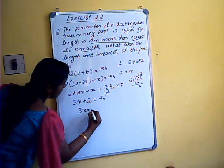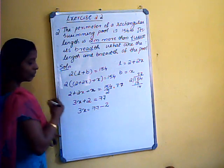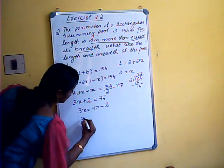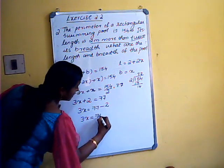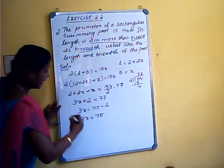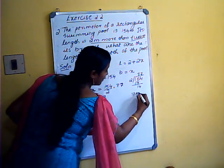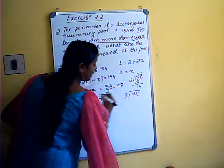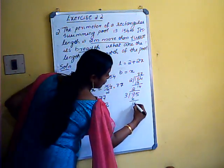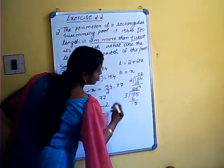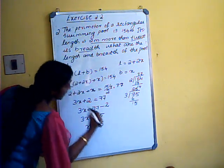So 3x equals 77 minus 2, which gives 3x equals 75. Therefore x equals 75 divided by 3. Since 25 times 3 is 75, we get x equals 25. So breadth equals 25 meters.